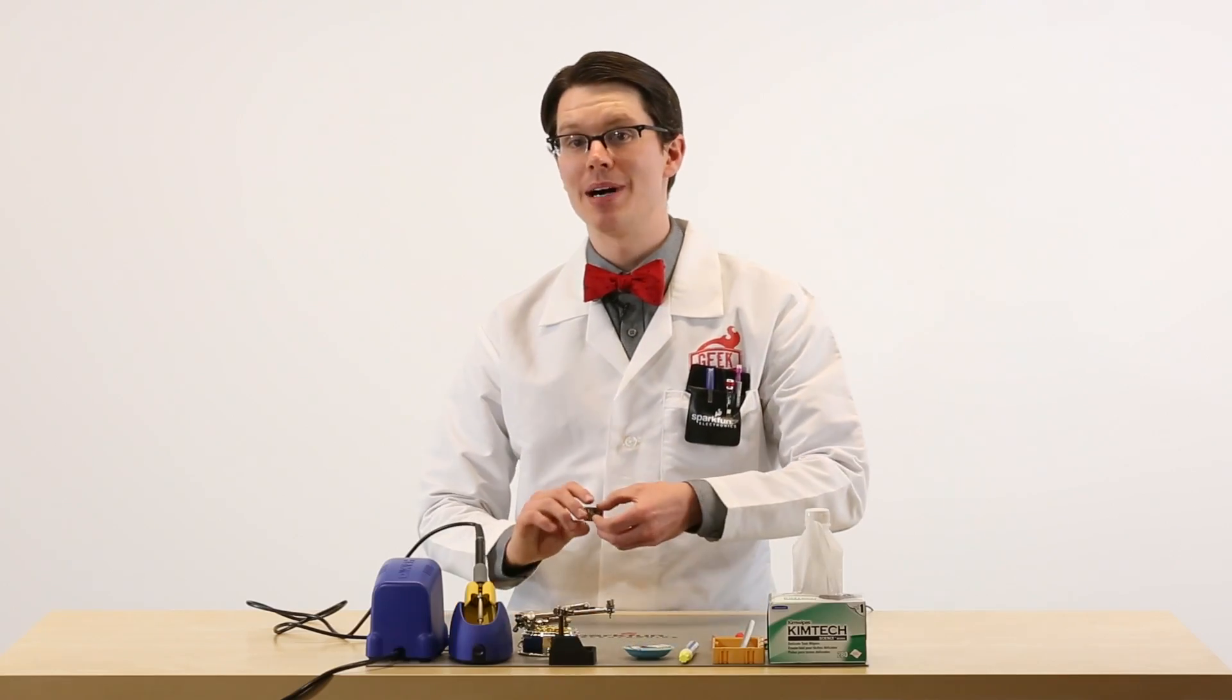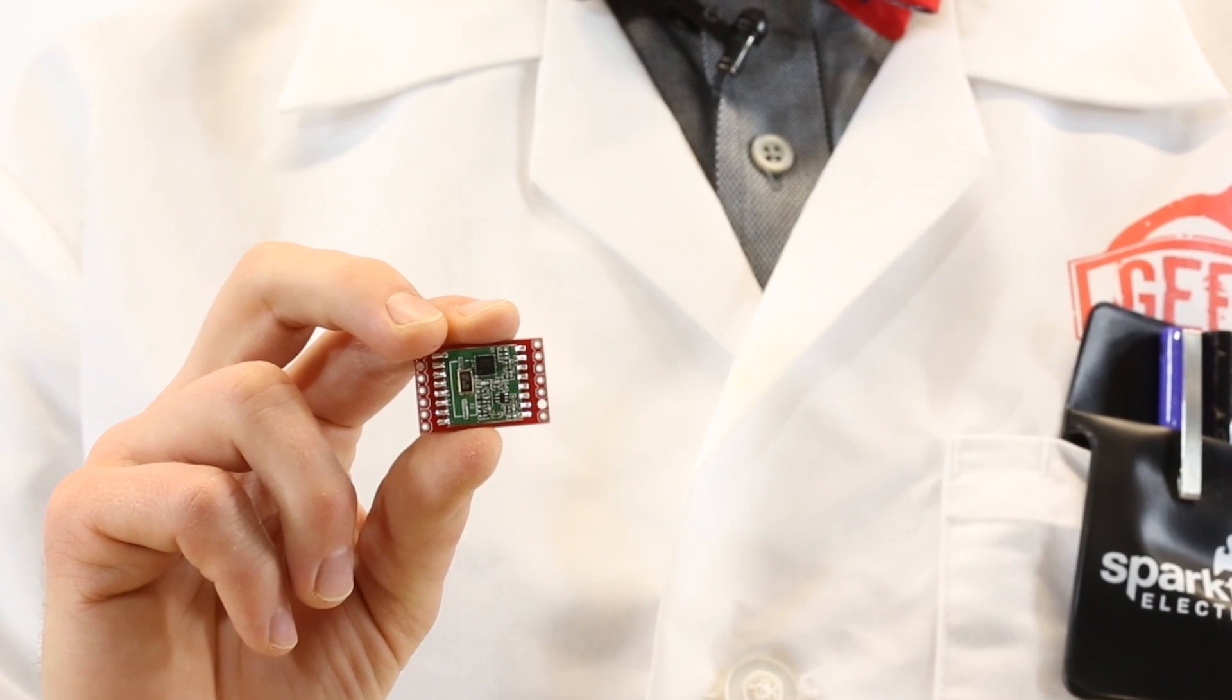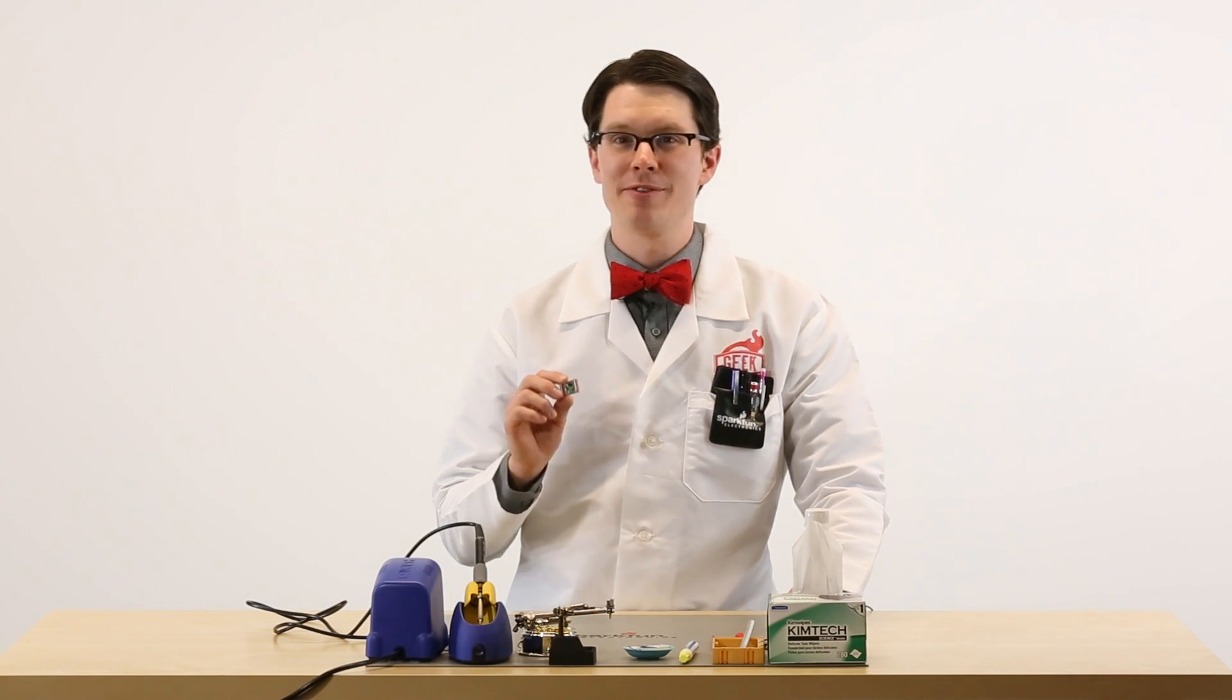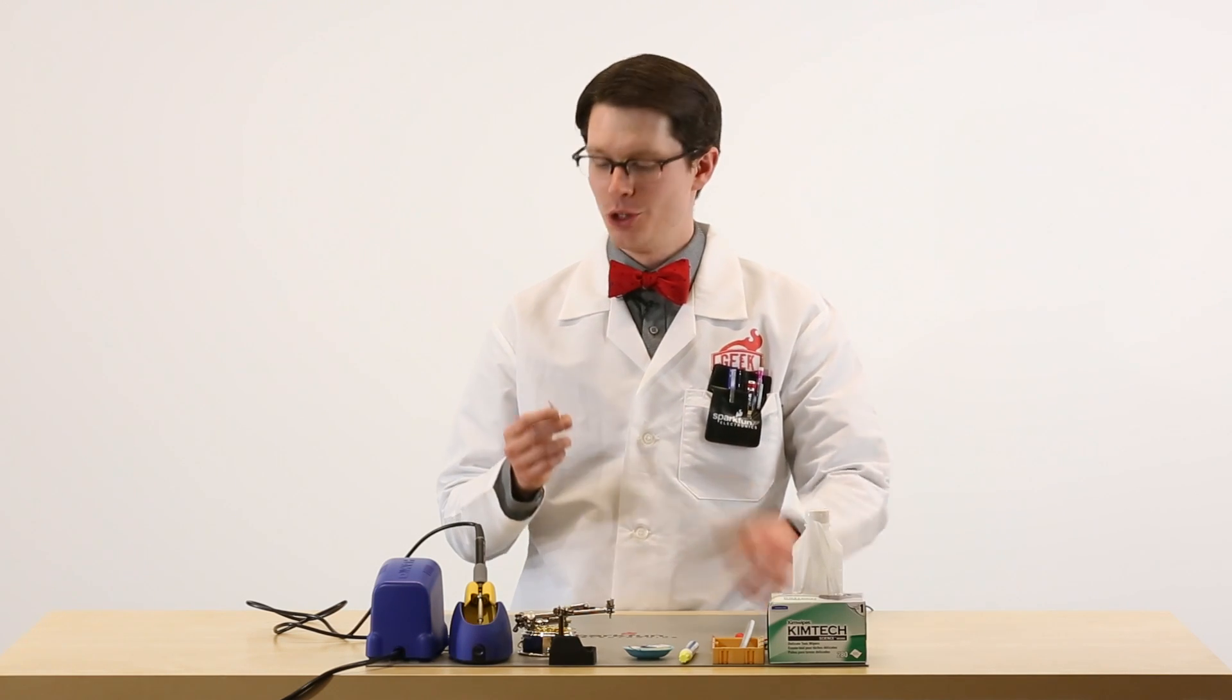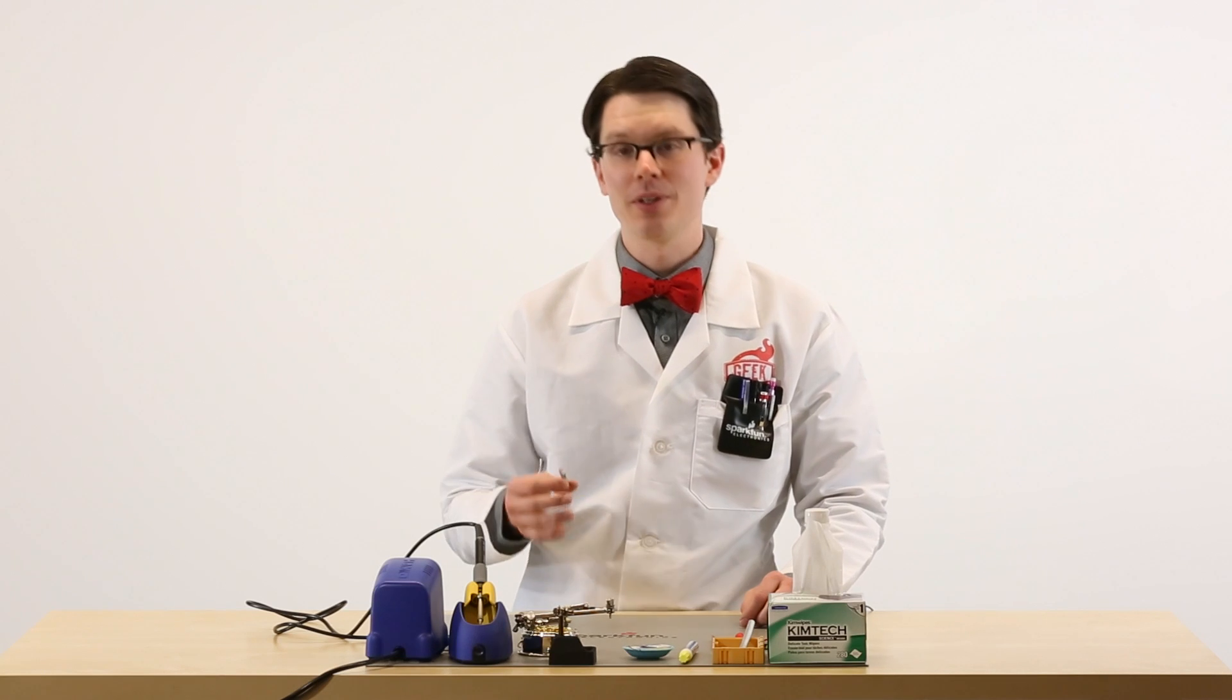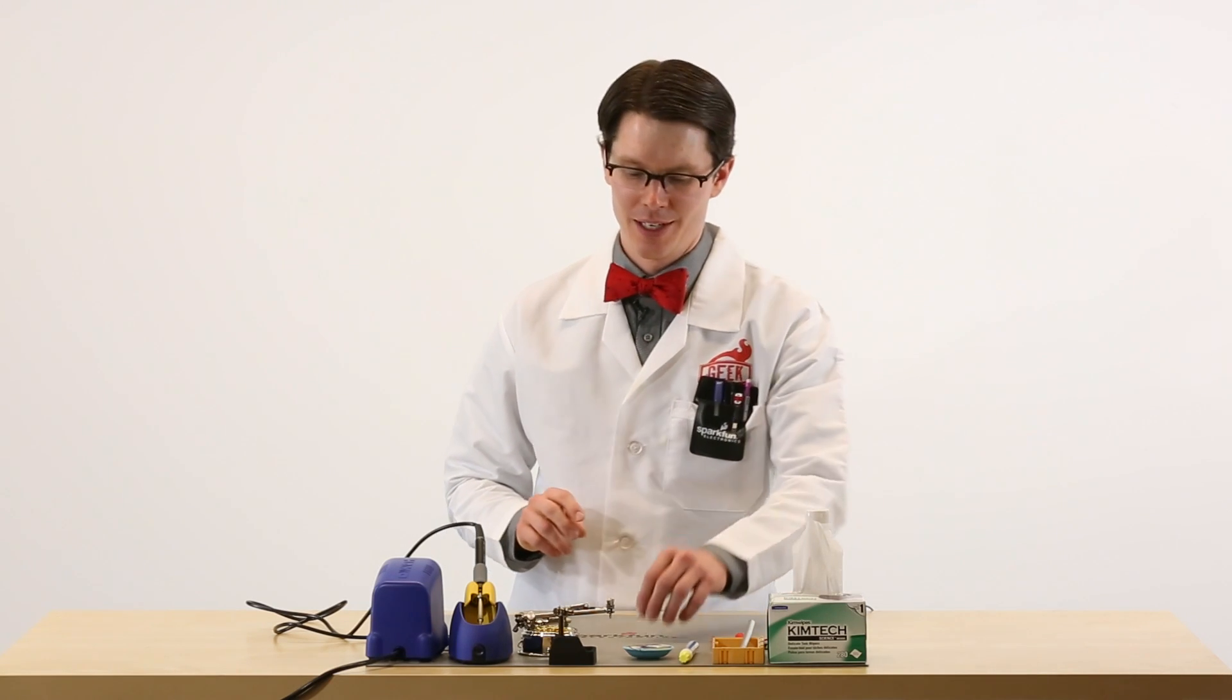You're now ready to use the module in your project. I've noticed that these castellated via modules are popular among RF manufacturers. For example, Bluetooth, Wi-Fi, any number of wireless modules seem to come in this form factor. And it's really handy, especially if you know some layout, you can make a footprint that'll accept these modules in your project. And hopefully this has given you an idea of how to mount those modules to your project. Thanks for watching.